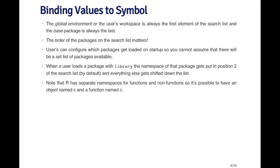When a user loads a package with the library function, the namespace of that package — which is the environment containing all the symbols and their values — gets put in the second position of the search list, right behind the global environment. Everything else gets pushed down one level. The search will then include that new package in addition to all the other packages that were originally on the search list.